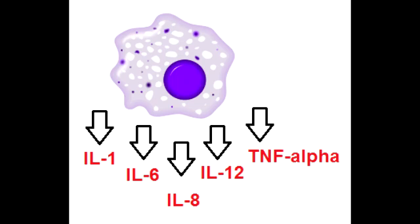What are all the functions of interleukin-12? The functions of interleukin-12 are to induce differentiation of T-cells into T-helper-1 cells, as well as to activate natural killer cells. Additionally, interleukin-12 is also secreted by B-cells.